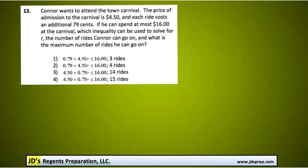The price of admission is $4.50, and each ride costs an additional $0.79. So if you're going to write that as an equation or an inequality, it is $4.50 for the admission plus an additional $0.79 per ride. So that would be $0.79r, and we're going to use our variable r for the number of rides.